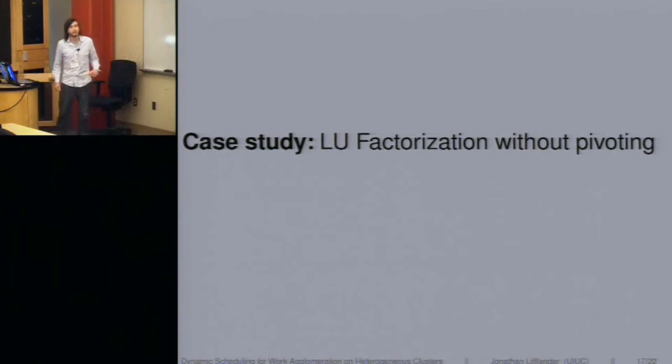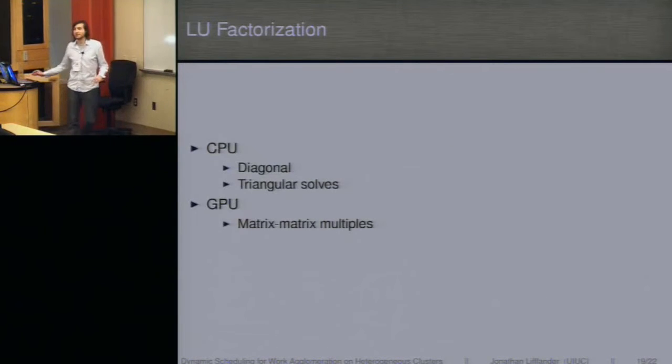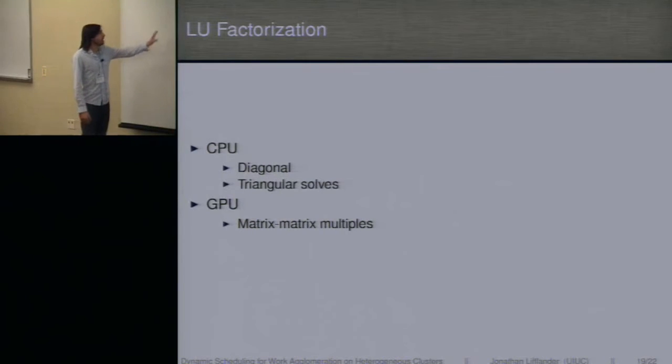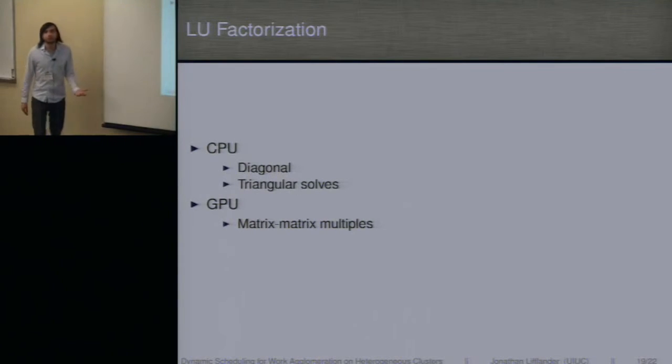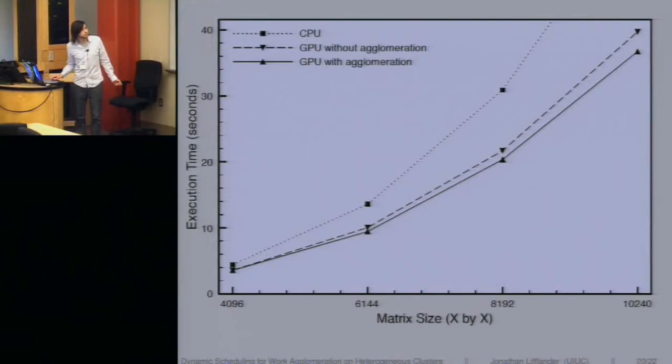Then quickly, second case study is LU factorization without pivoting. Since I already explained LU, I don't have to do that. So on the CPU, we keep the diagonal factorization and triangular solves. On the GPU, we ship off the matrix-matrix multiplies. And here's the same graph for LU.